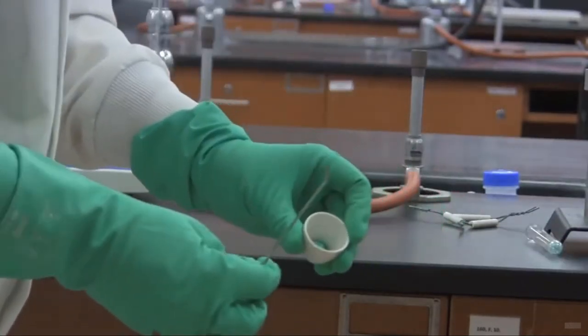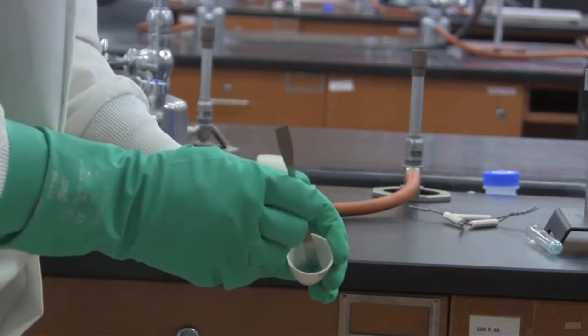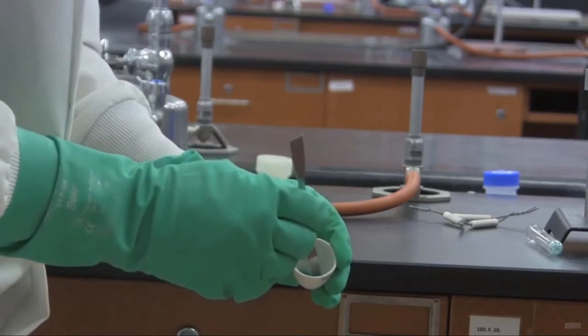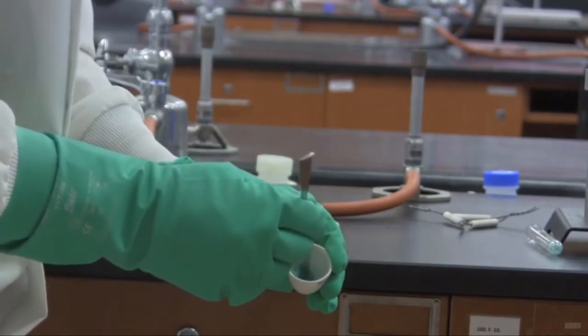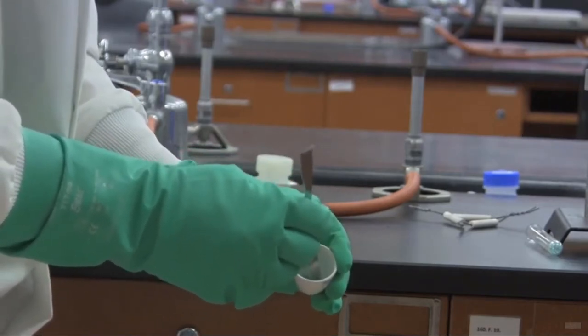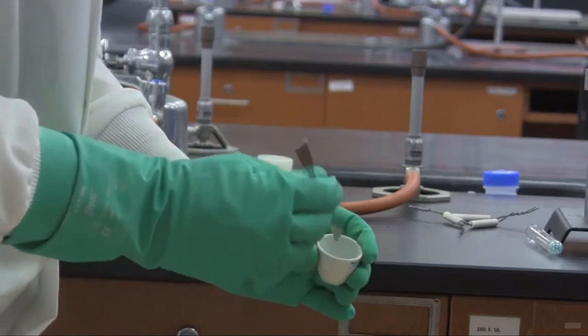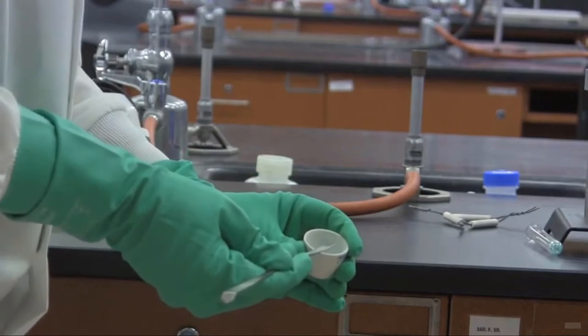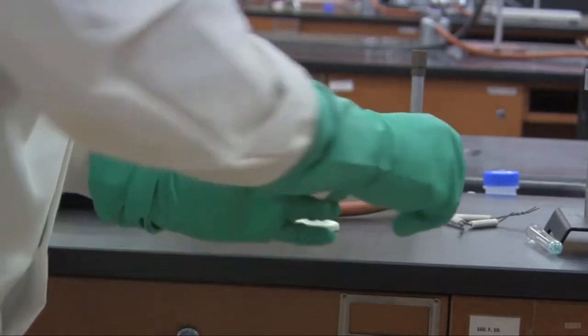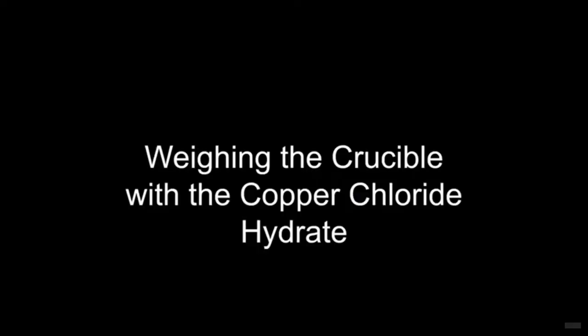Now, I want to show you what the sample looks like in the crucible. And you can see that it is a little lumpy. So what we're doing is just going in here with the spatula and just breaking apart any lumps that we might see here. This will help with the reaction and make sure that it all gets dehydrated once we start heating it. And again, don't worry about any that might be left on the spatula. The reason we're not worried about that is, again, we haven't weighed it yet.